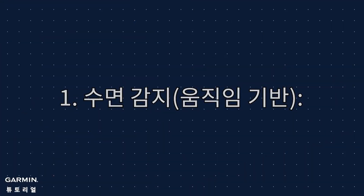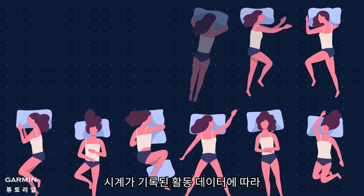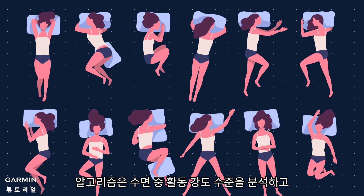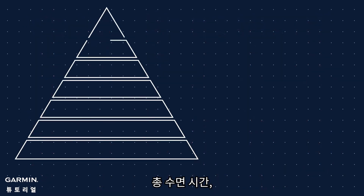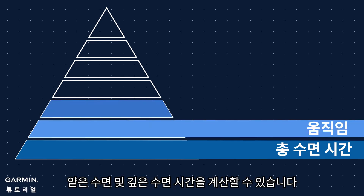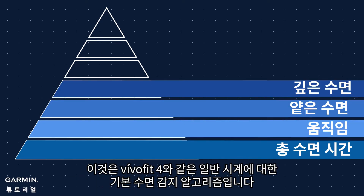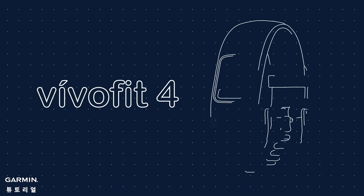1. Sleep detection. According to the wellness files recorded by the device, the algorithm can analyze your active intensity level during sleep and calculate your total sleep duration, movements, and light and deep sleep duration. This is the basic sleep detection algorithm for general devices, like VivoFit 4.